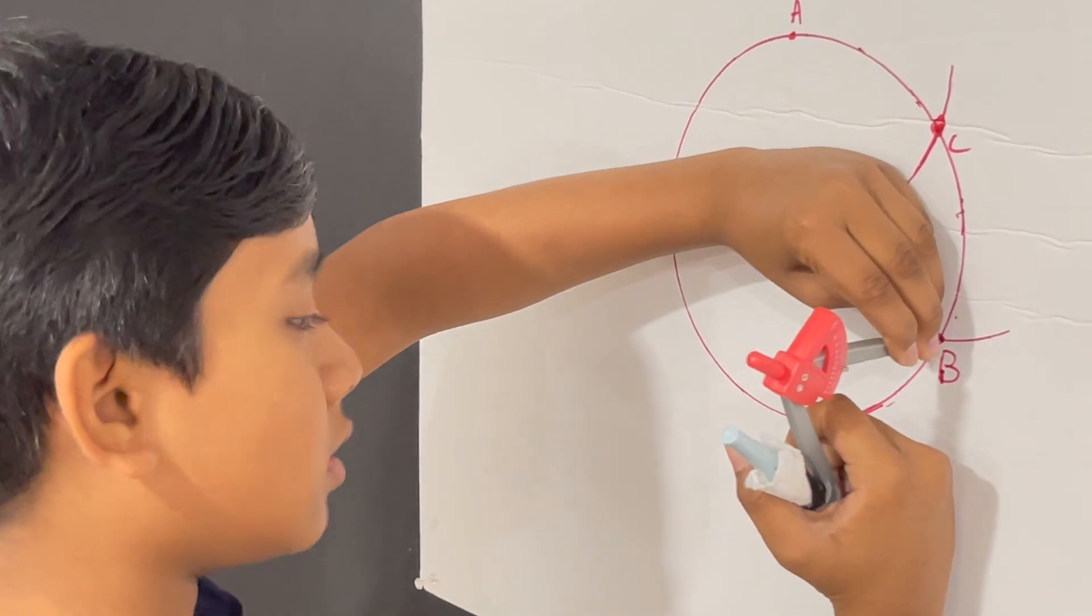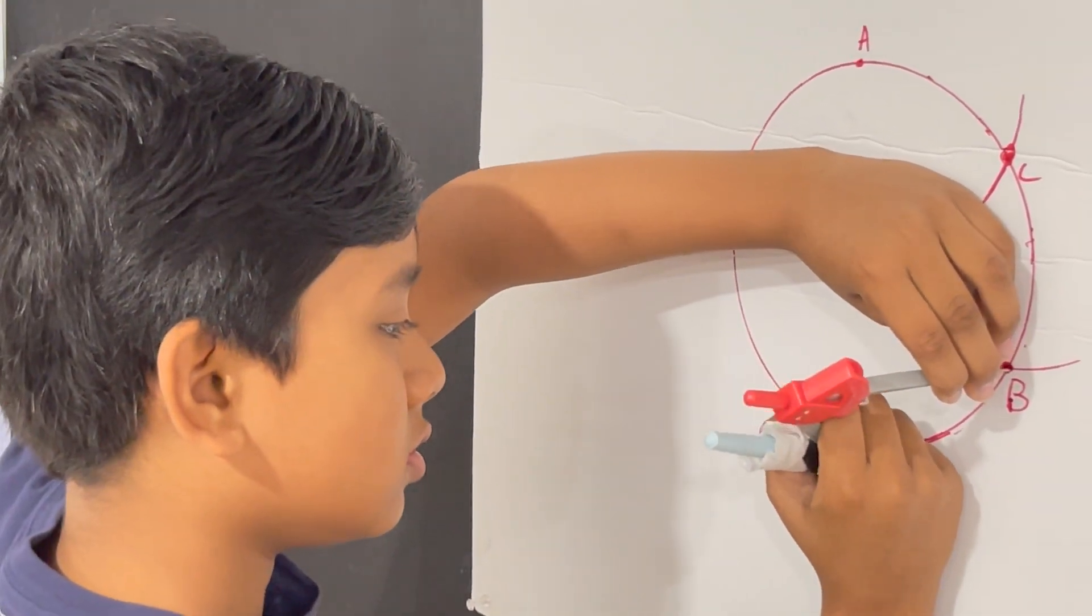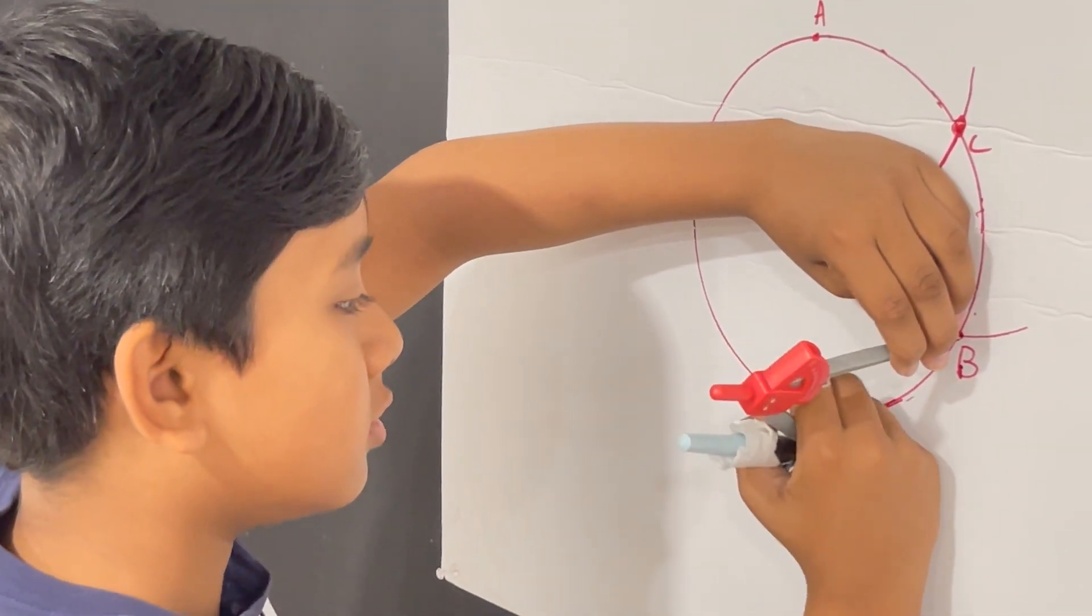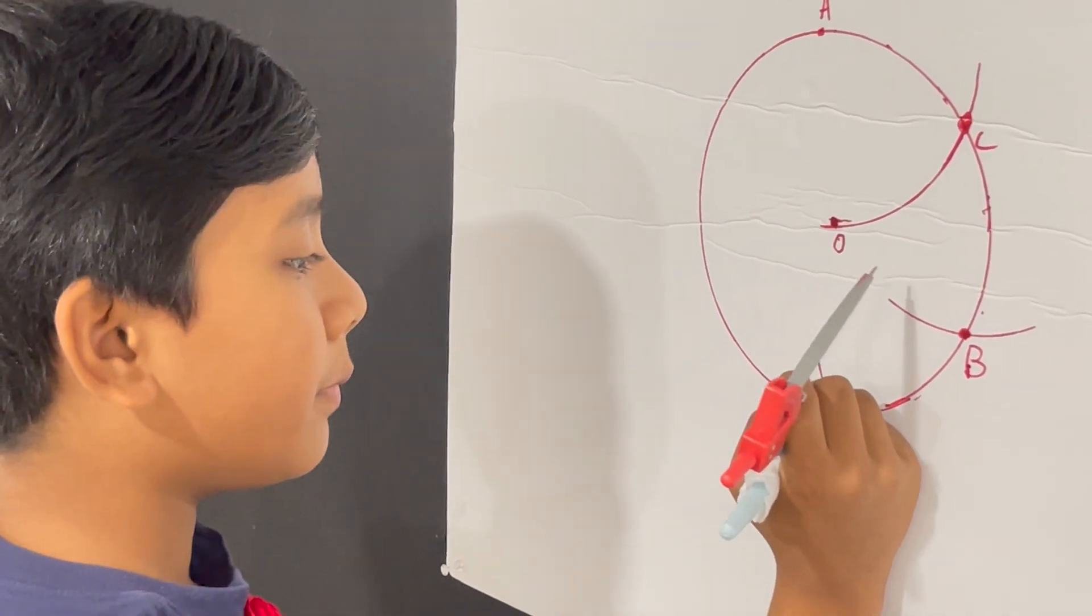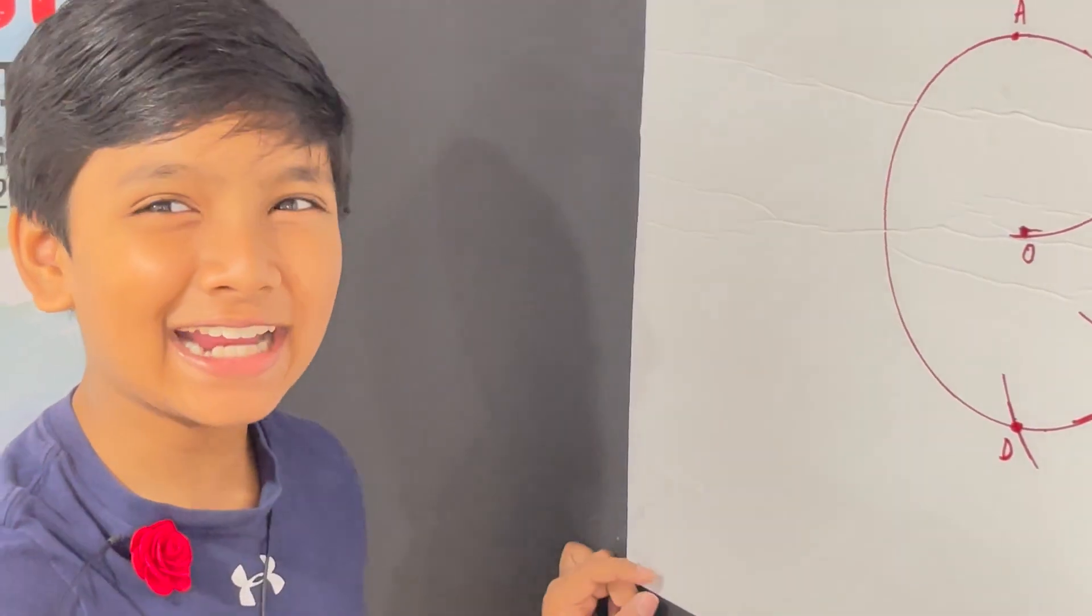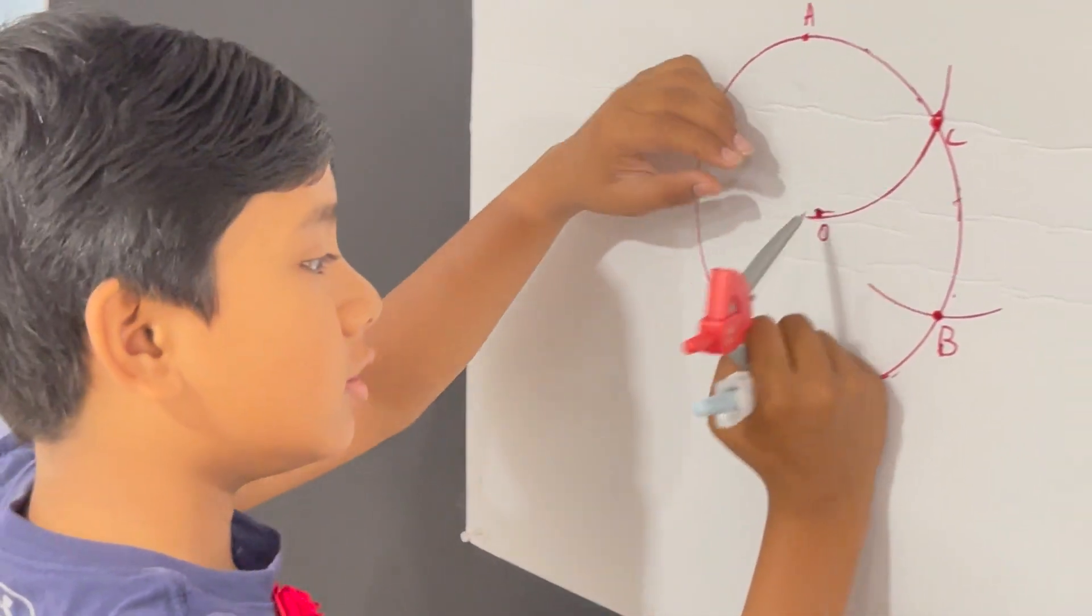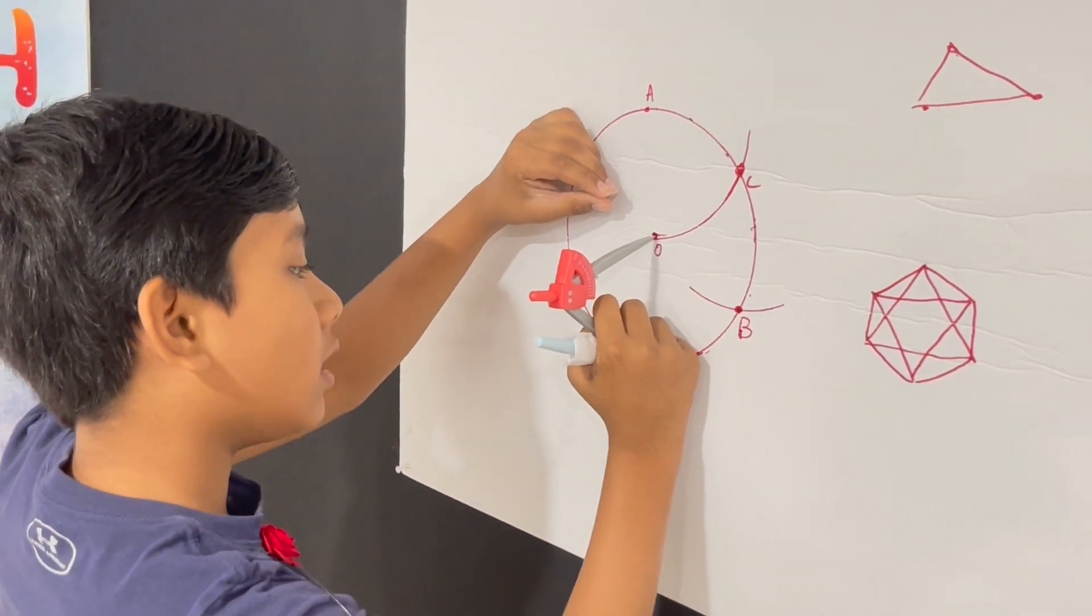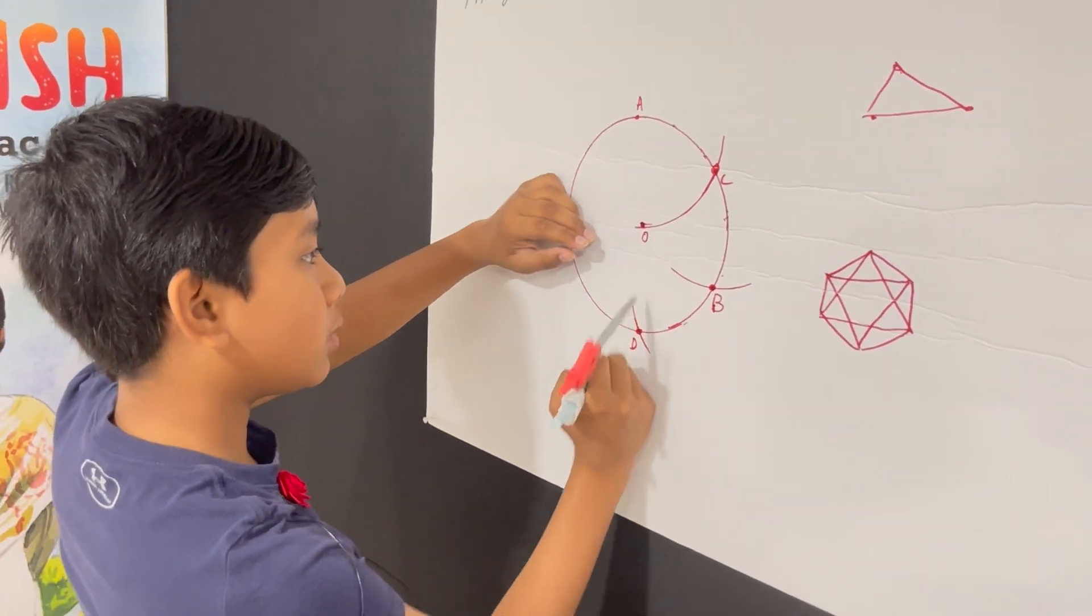So now I'm going to put another point here, which I'm going to name B. Ha ha ha ha ha. So now I'm going to just repeat this process.